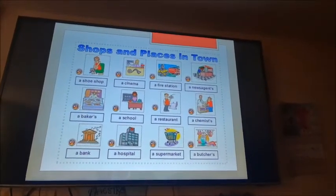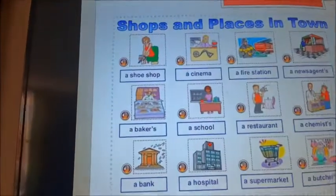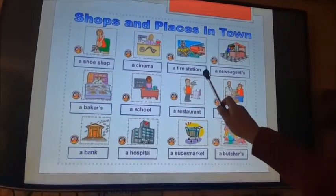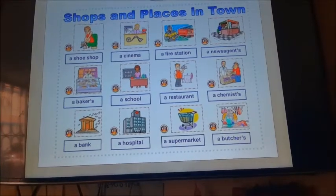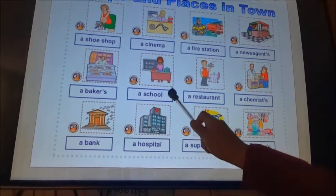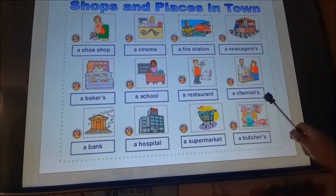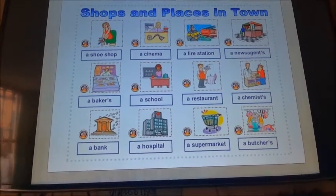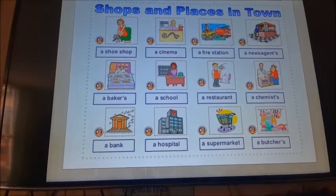Now we have to speak about shops and places in a town. For example: 'a shoe shop' — una zapatería; 'a cinema' — un cine; 'a fire station' — una estación de bomberos; 'news agent' — el vendedor de periódicos; 'bakery' — panadería; 'school' — la escuela; 'restaurant' — el restaurante; 'chemist' — farmacia; 'bank' — banco; 'hospital' — el hospital; 'supermarket' — supermercado; 'butcher' — carnicería.